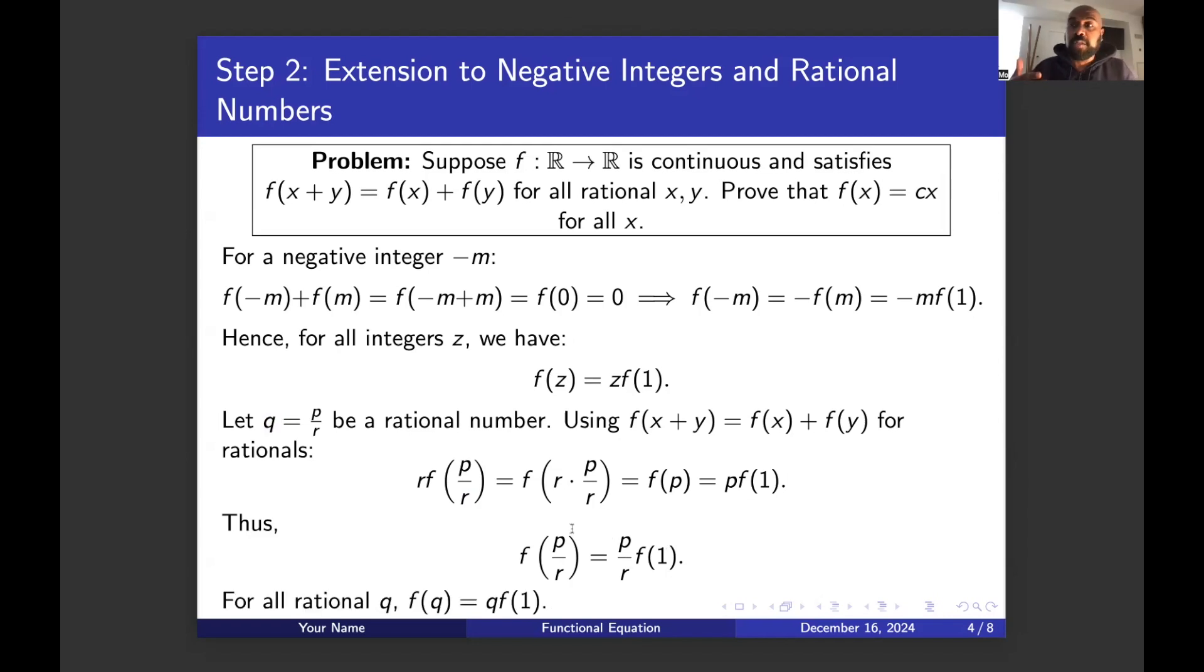Now let's look at the problem we were actually asked to figure out and see how much progress we've made. So we figured out that f of q is q times f of one for any rational number q. If we look back, what we wanted to prove is that f of x is equal to some constant times x for all x. Now given what we have here, it looks like the constant that we need to pick is f of one, right?